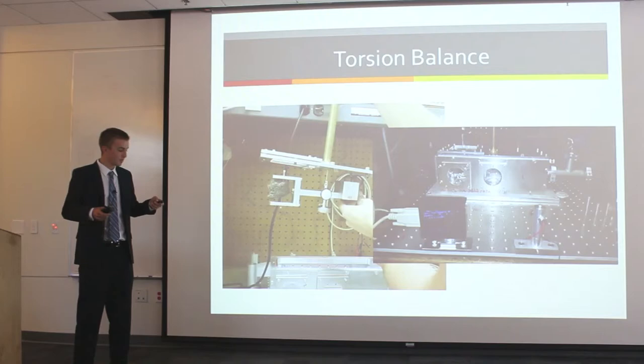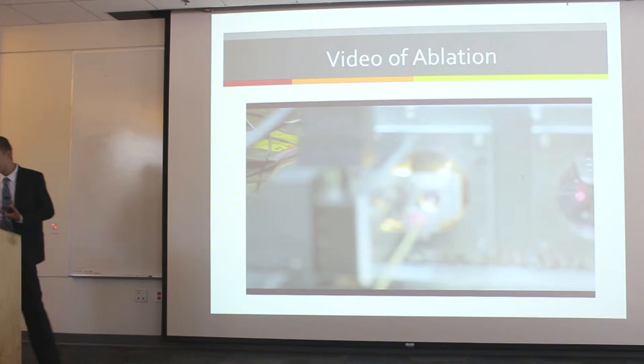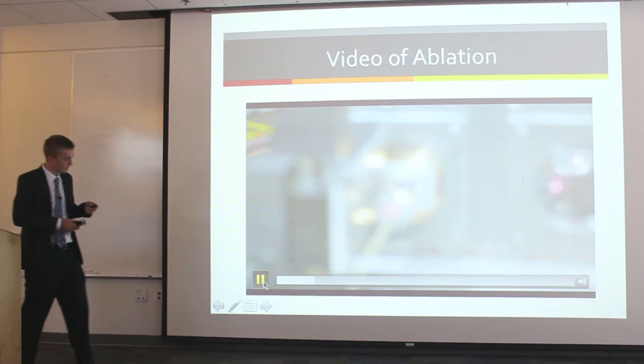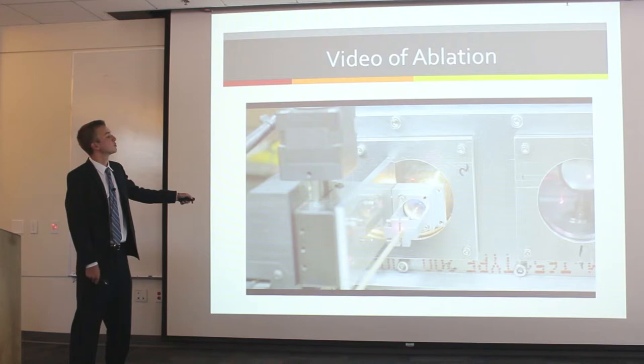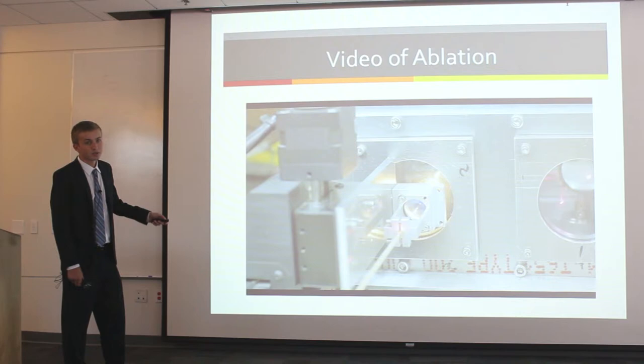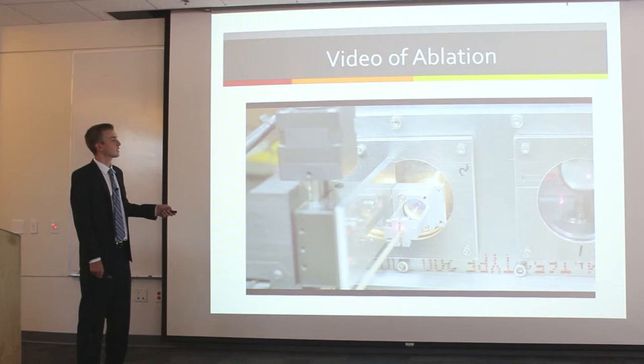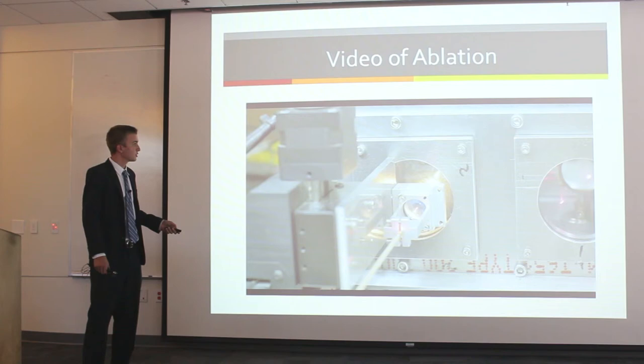Here is a video of the laser ablating some material on the torsion balance. We can see the laser — well, the laser is over here, but we have a fiber optic cable and a lens that puts the laser spot on the asteroid. The problem here is very clear: we have all this light coming out, and I'll explain what that does to our system.